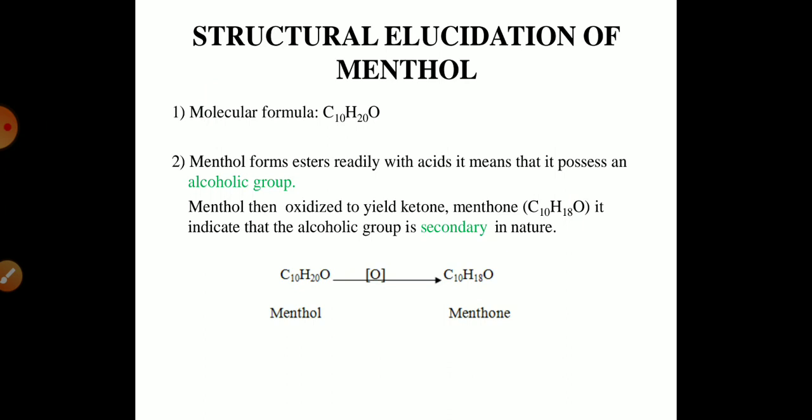So menthol has a general formula C10H20O and menthol forms esters readily with acid. It means that it has an alcoholic group. Menthol then oxidized to yield the ketone, menthone like C10H18O. It indicates that the alcoholic group is secondary in nature.